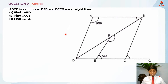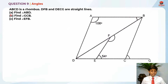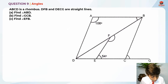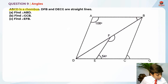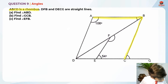This is Question 9 and this question is testing us on angles. Let's read the question for Part A first. ABCD is a rhombus, DFB and DECG are straight lines. Let's highlight the key information. So ABCD is a rhombus — this is ABCD.